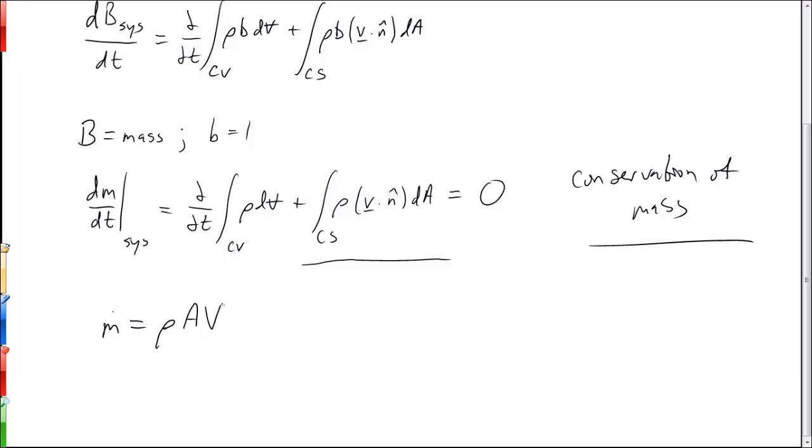Now in a more general case, when the density is not constant or the velocity v is not constant, then this is generalized to: the mass flow over a boundary is just equal to the integral over that boundary of rho v dotted with n hat dA.